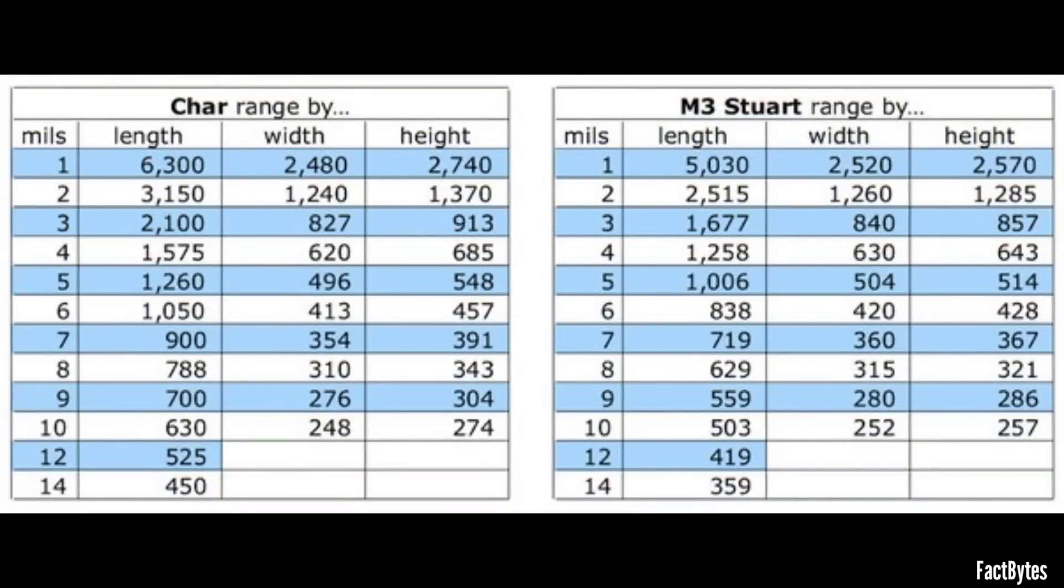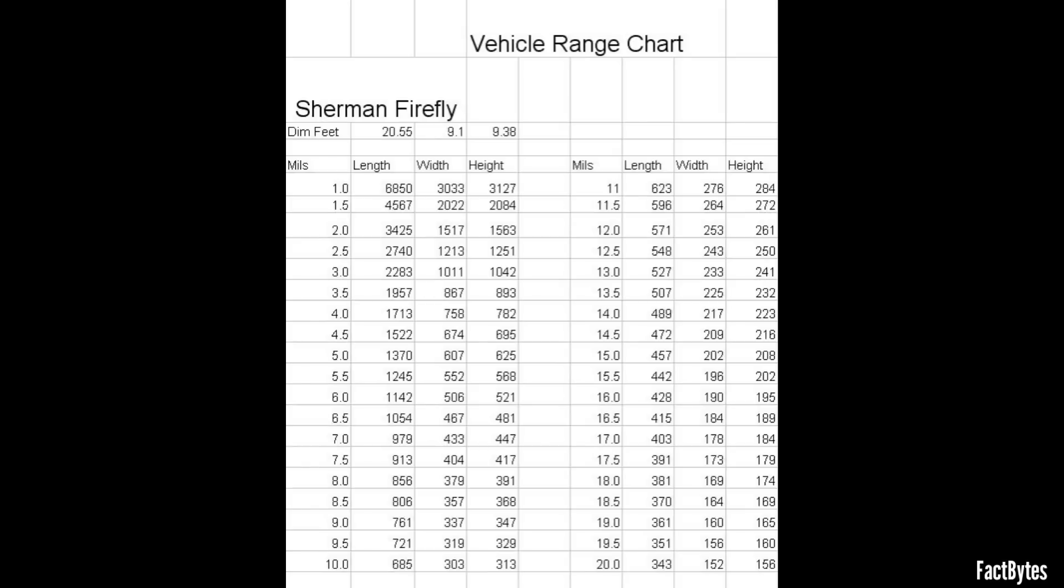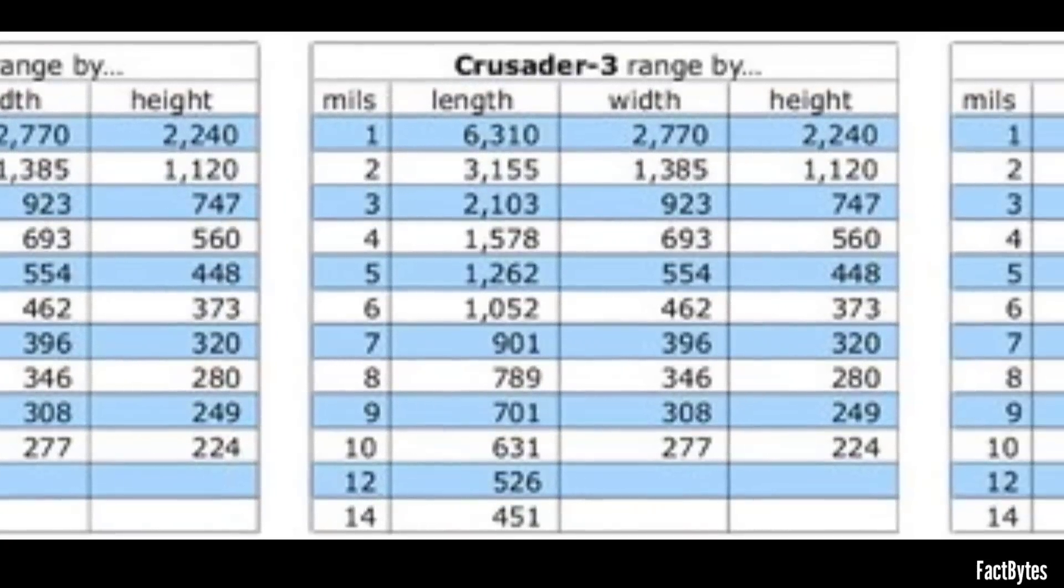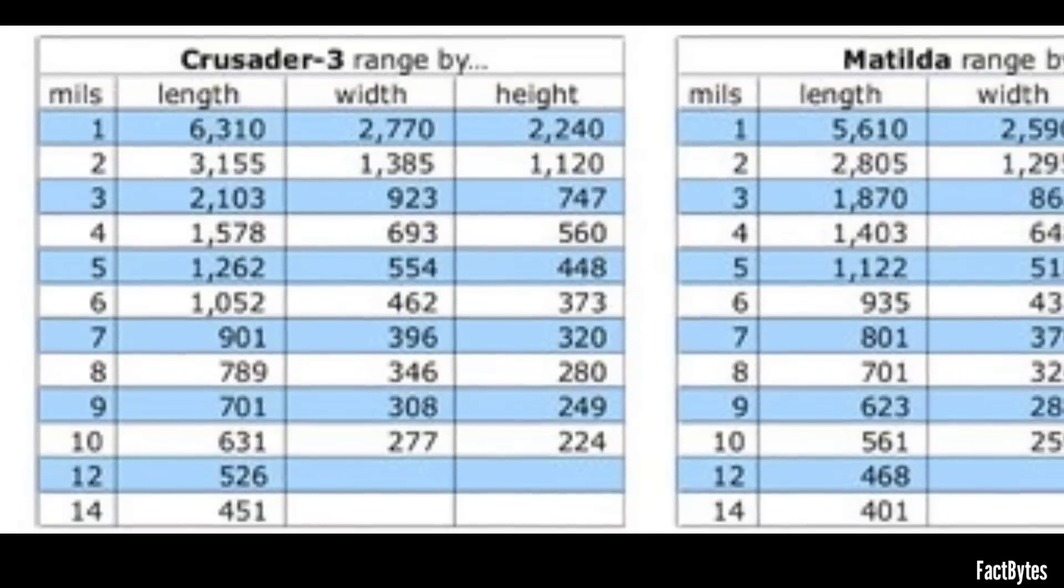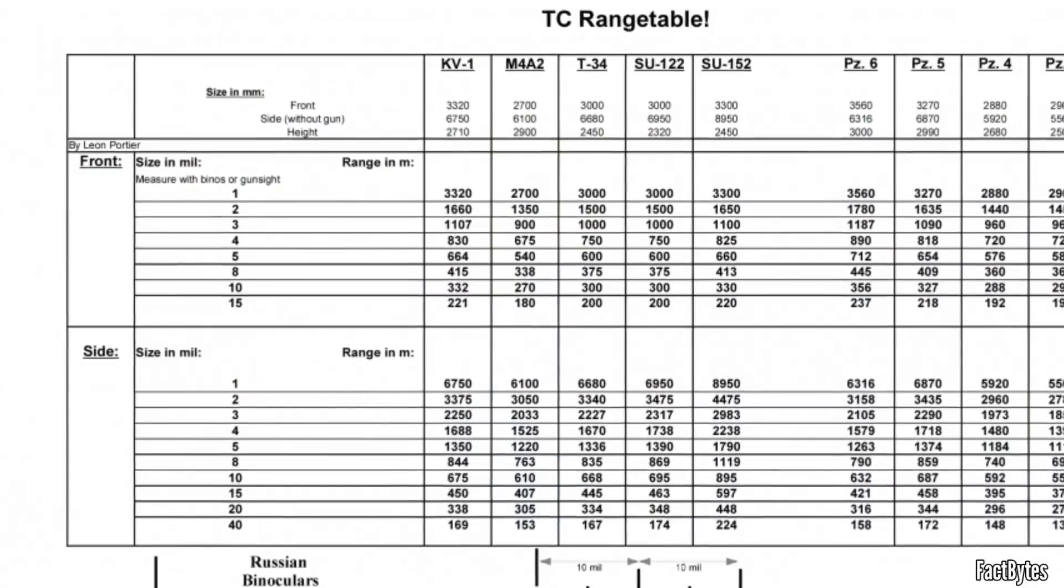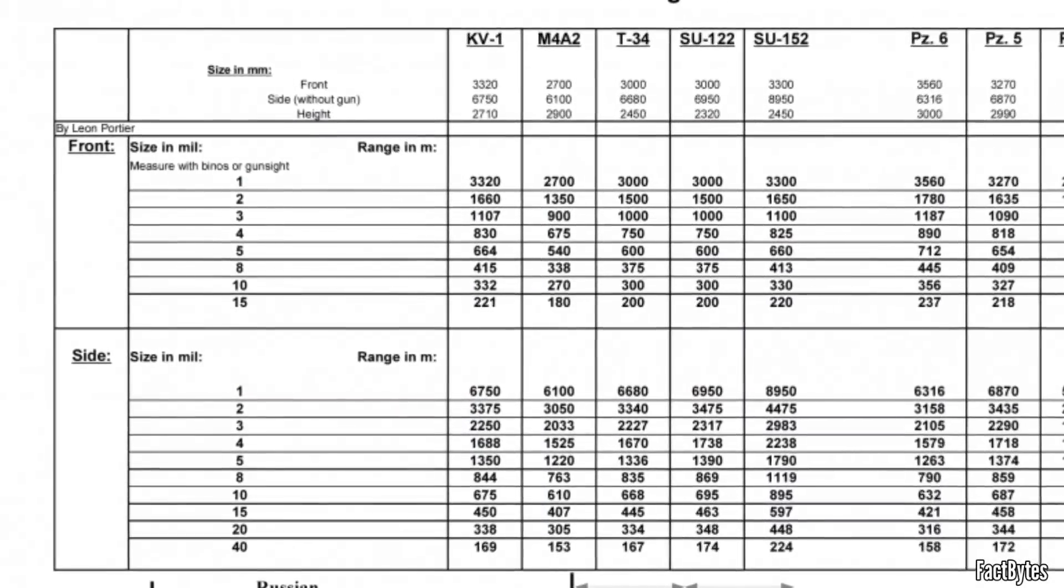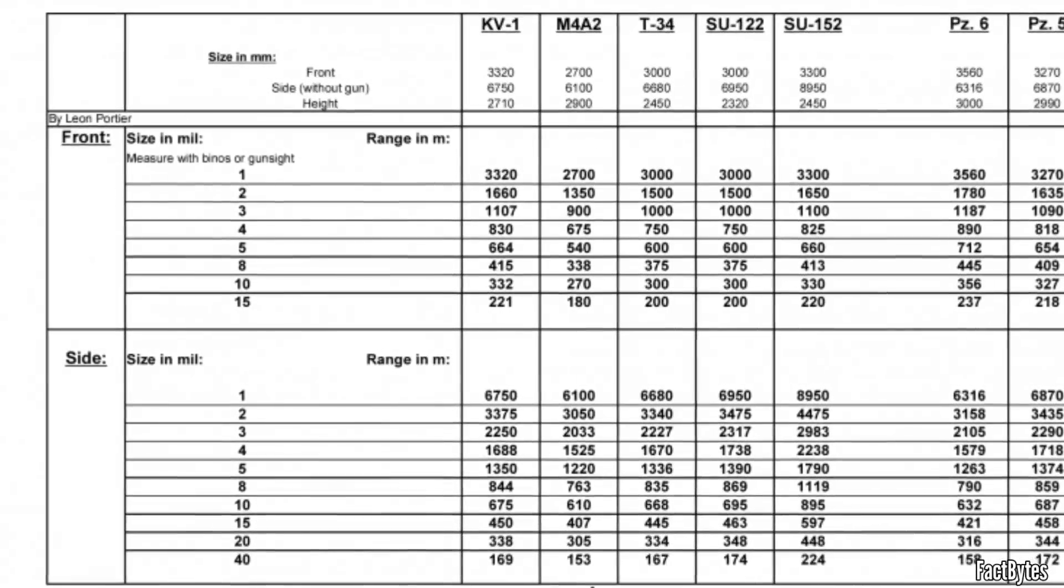For each type of tank encountered on the battlefield, the German army compiled a corresponding range table. These tables were meticulously crafted for tanks such as the Sherman, T-34, Char, Stuart, and others, providing essential data for quickly and accurately estimating ranges during combat engagements. As you can see, these range tables contain multiple entries, each mapping the dimensions—length, width, and height—of a specific tank type to a corresponding measurement in mils. The reason is that the orientation of an enemy tank resulted in three different views for a German tank gunner, and each view could correspond to different ranges.